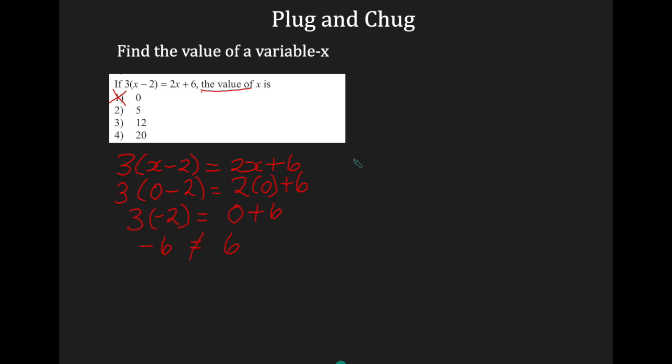Okay, let's move on to the next answer choice, which is, I'm assuming x may be 5. So I'm going to write my equation again. 3x minus 2 equals 2x plus 6. I'm going to plug in 5 wherever I see x. And then I'm going to chug with order of operations. Parentheses first. 5 minus 2 is 3. Only one operation, multiplication. 3 times 3 is 9. On the right-hand side, I'm going to multiply first. That gives me 10. I'm going to add 6. I get 16. 9 is not equivalent to 16. So 5 is not my answer.